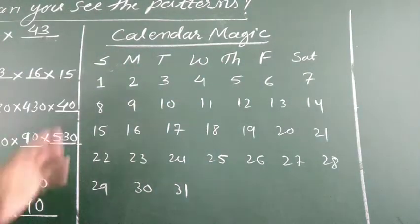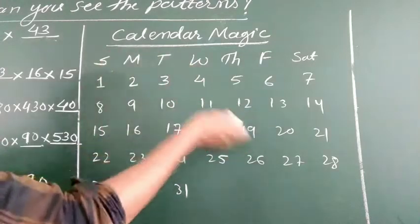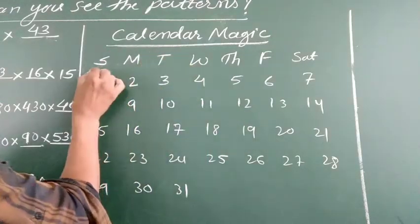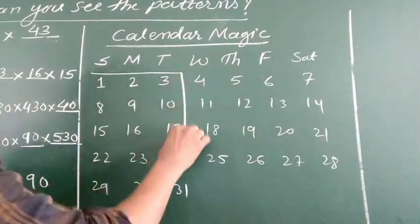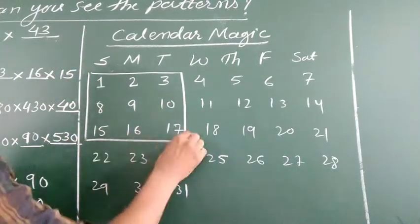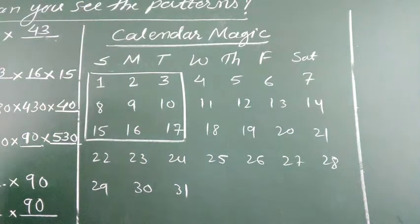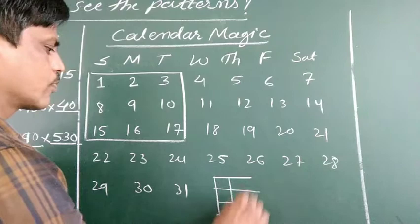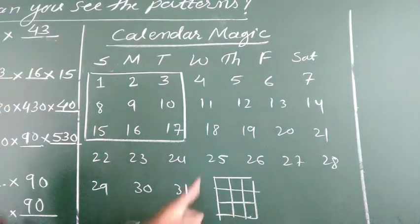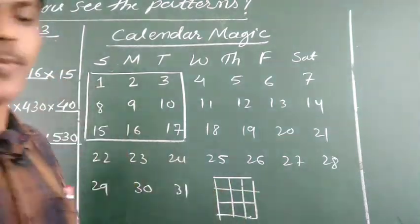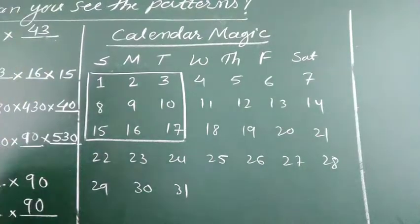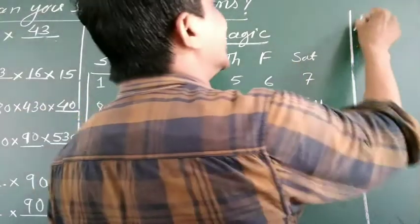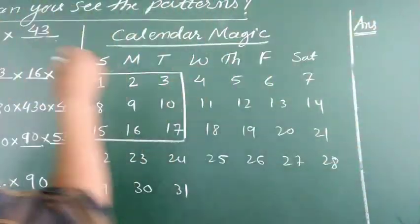Now we have to see: we have 31 days. We select a 3 by 3 square from the calendar — a 3 by 3 square. Now what we have to do here is find out the addition of the numbers which are given in square A. In this square, how many numbers are there? 1, 2, 3, 4, 5, 6, 7, 8, 9 — nine numbers are there.